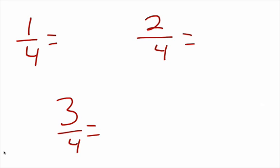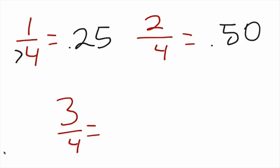Now we have the 4s. 1 over 4 is 0.25. Whenever you have a denominator of 4, think about quarters — there are 4 quarters in a dollar. If you only have 1 quarter out of 4, that's 0.25. 2 out of 4 is 0.50, and 3 over 4 is 3 quarters, which is 0.75. Real simple.